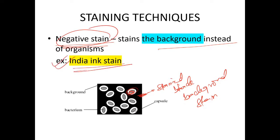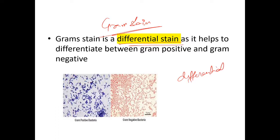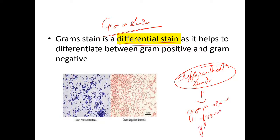Next, what is gram stain? Gram stain is a differential stain — it helps to differentiate gram positive from gram negative bacteria. Gram positive bacteria appear purple in color, and gram negative bacteria appear pink in color.